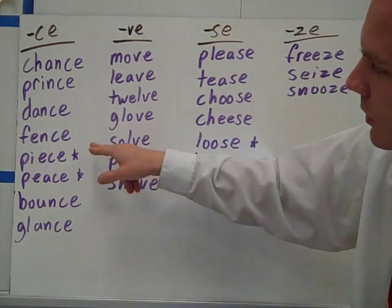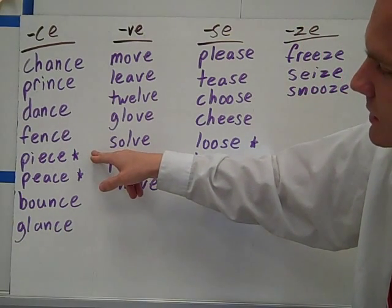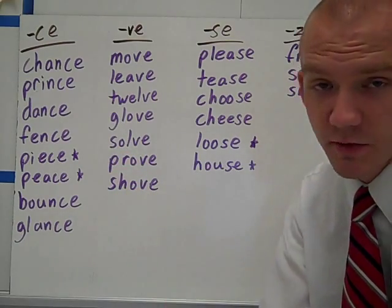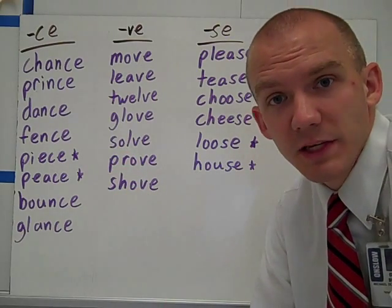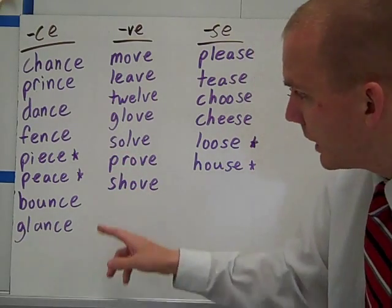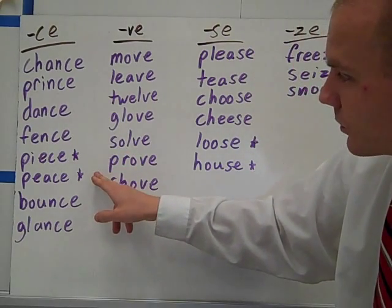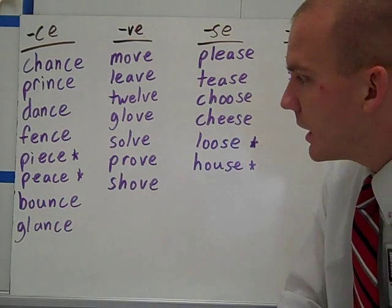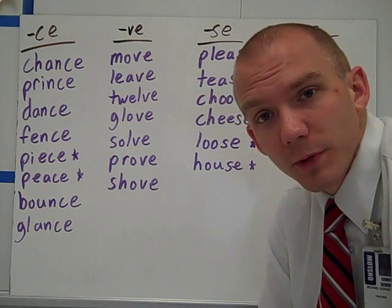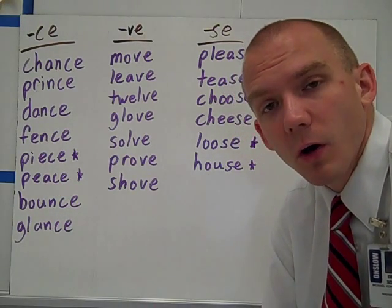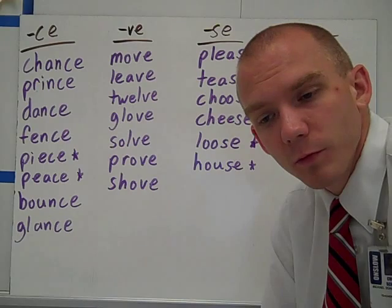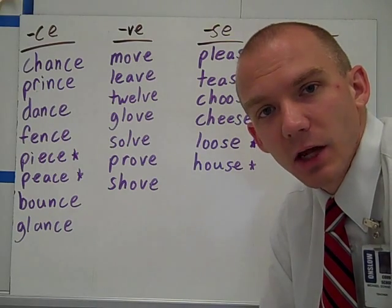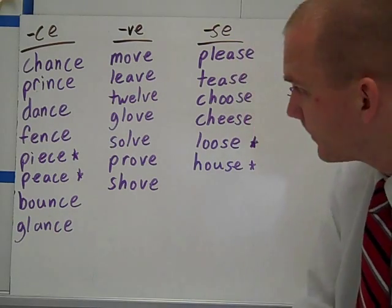Peace and piece — piece with the I, that's like a piece of a puzzle or a piece of cake. Peace with E-A-C-E, that is like world peace, like calm, relaxing — that type of peace.